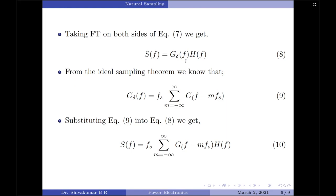In equation 8 we have G_delta(f) on the right-hand side. Borrowing from the ideal sampling theorem, the transfer function of the sampled signal is G_delta(f) = fs times summation over m from minus infinity to plus infinity of G(f − mfs). Substituting equation 9 into equation 8, we get S(f) = fs times that summation, all multiplied by H(f).